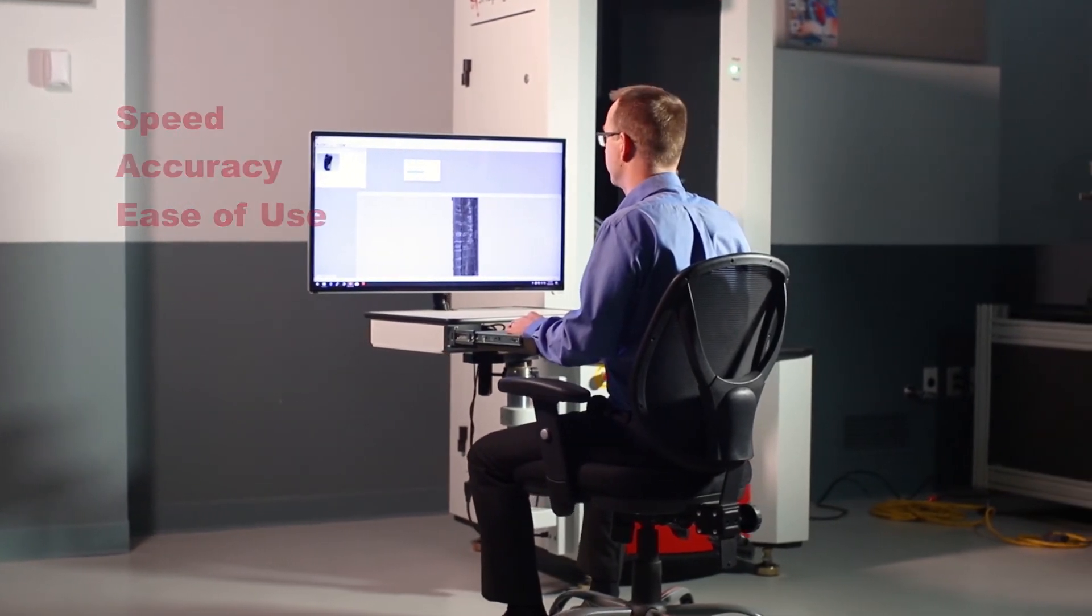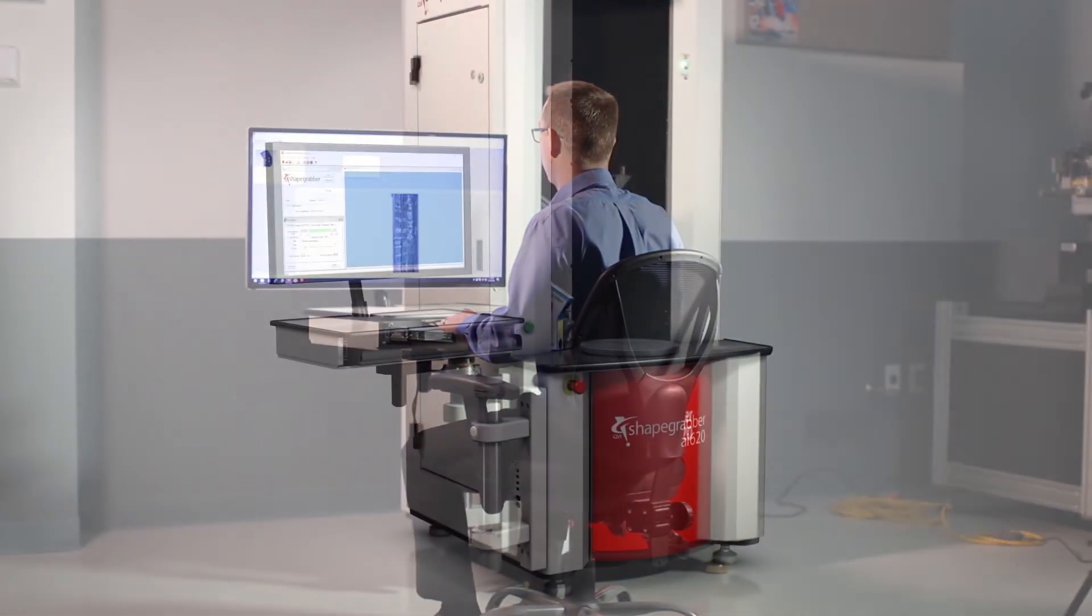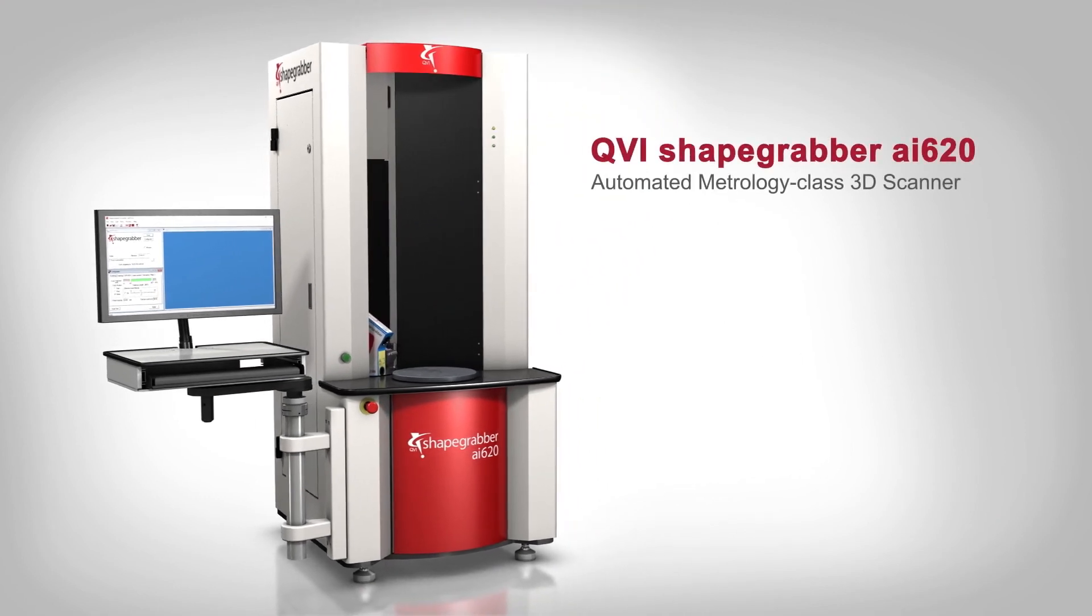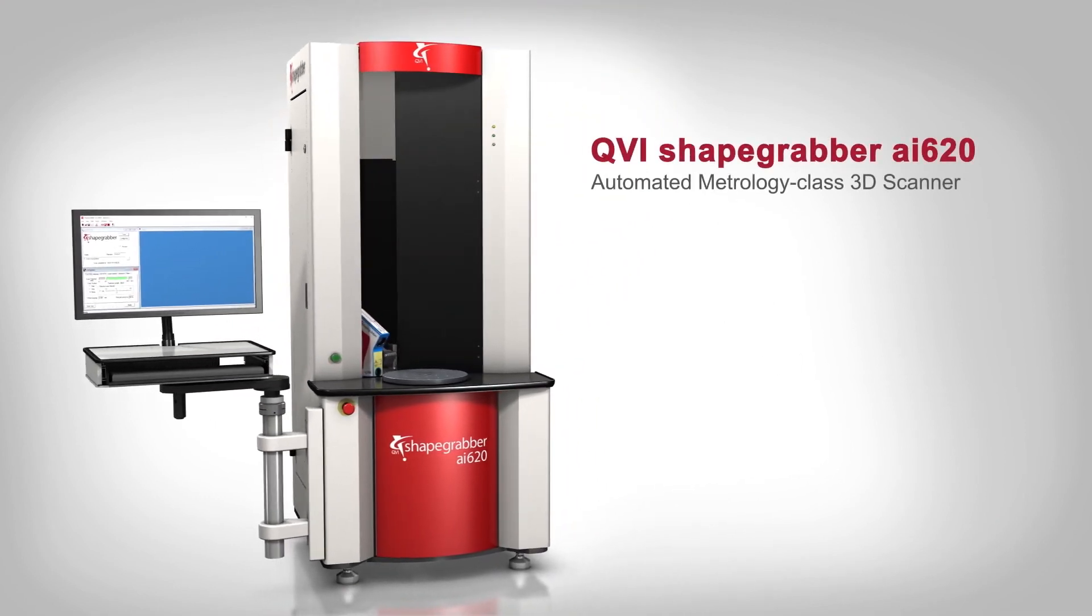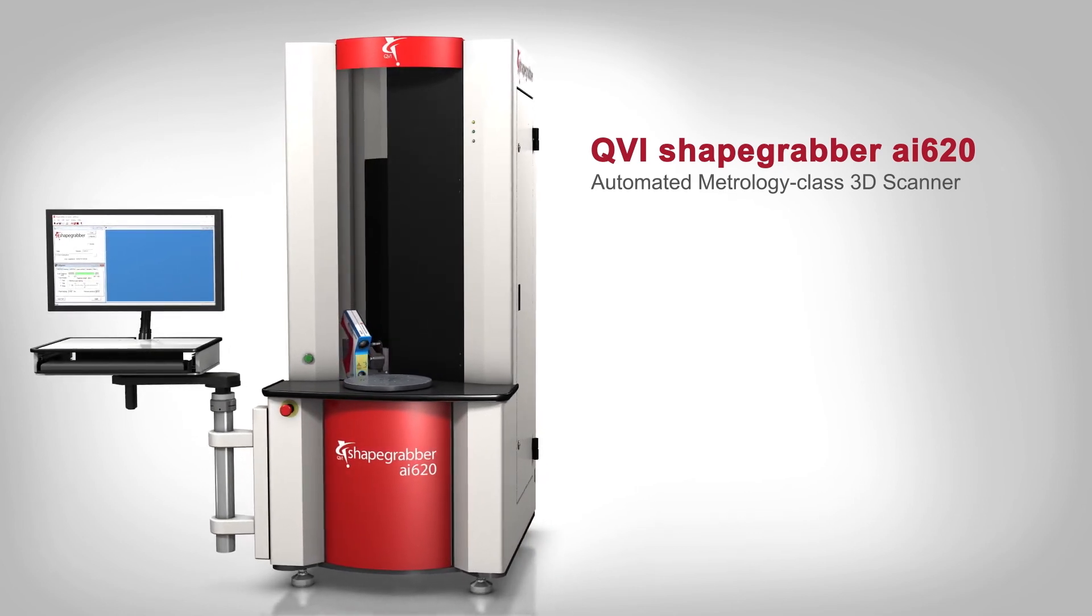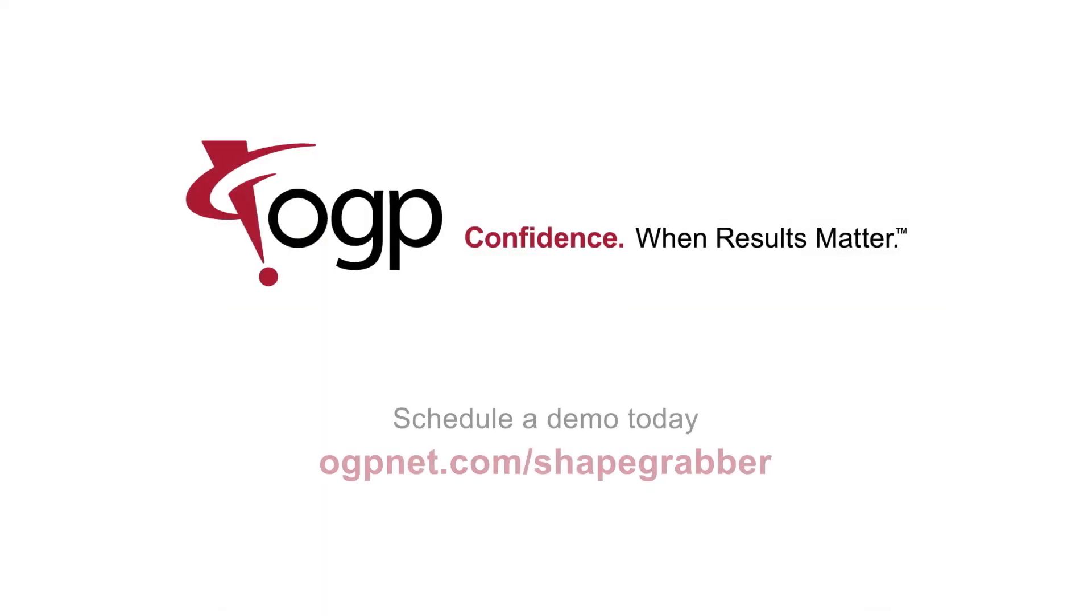The ShapeGrabber AI620 from QVI, a metrology class 3D scanner that is simple to use and delivers the fastest time to results in its class. Precision measurement tools designed for the people who use them, people like you. Visit OGPNet.com/ShapeGrabber to learn more and to schedule a demo. OGP. Confidence. When results matter.